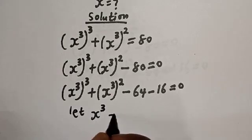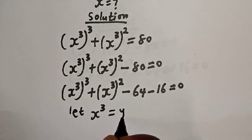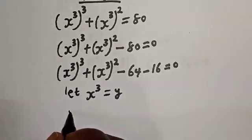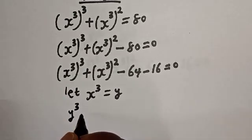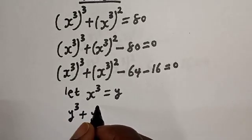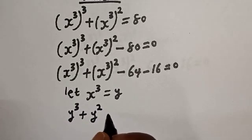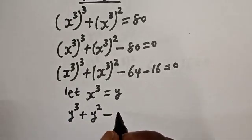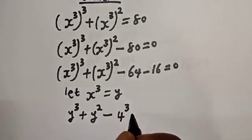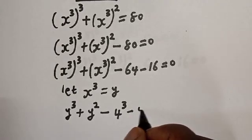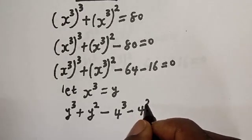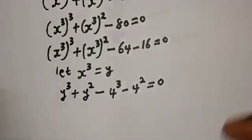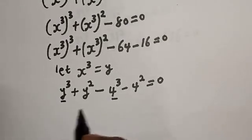Let s raised to power 3 equal to y. So this becomes y raised to power 3 plus y squared minus 80, which can be written as 4 raised to power 3 minus 4 squared, equal to 0. Now let's compare these two expressions.